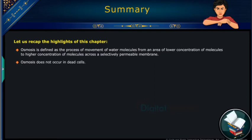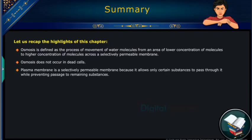Osmosis does not occur in dead cells. Plasma membrane is a selectively permeable membrane because it allows only certain substances to pass through it while preventing passage to remaining substances.